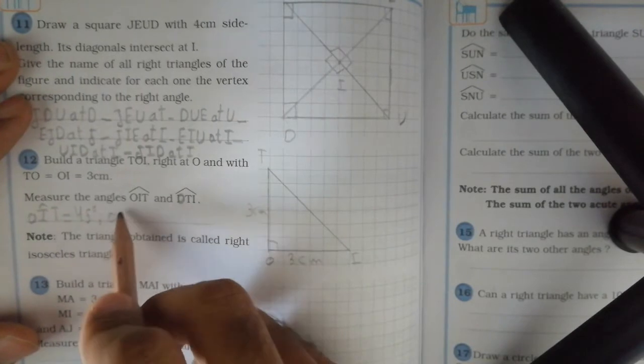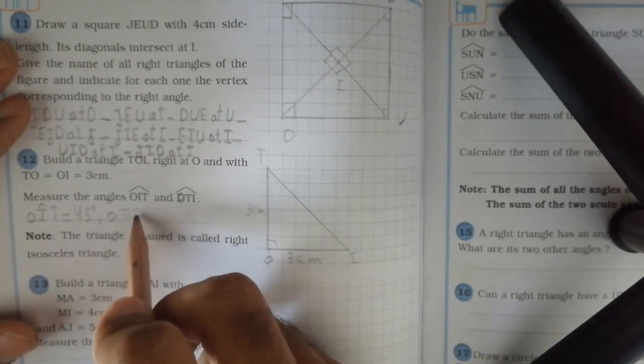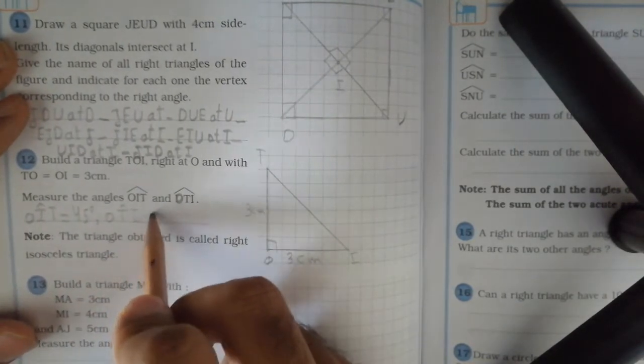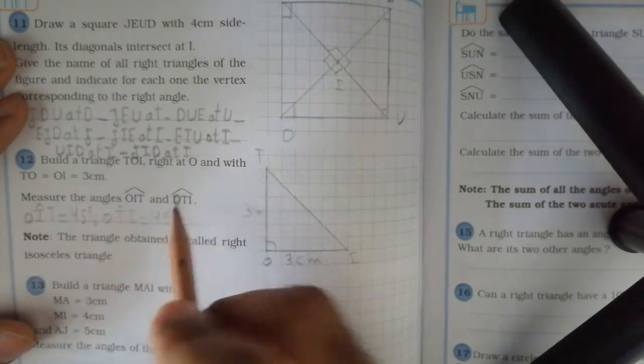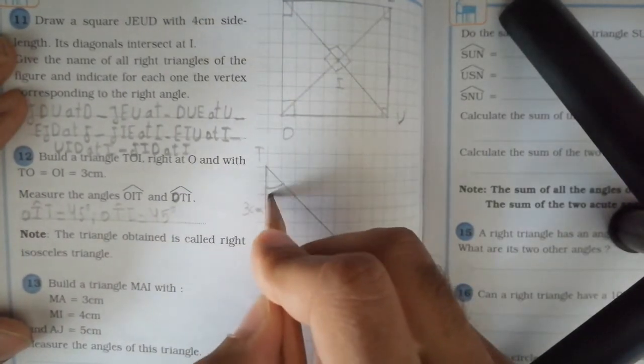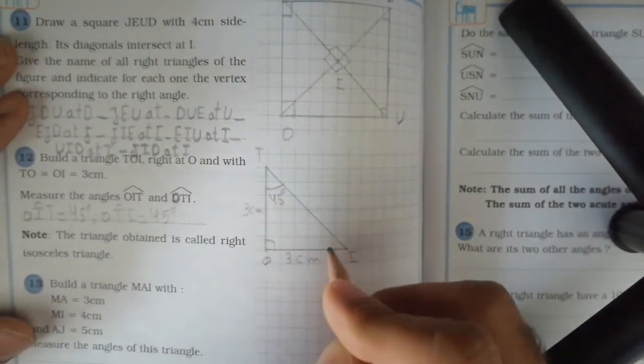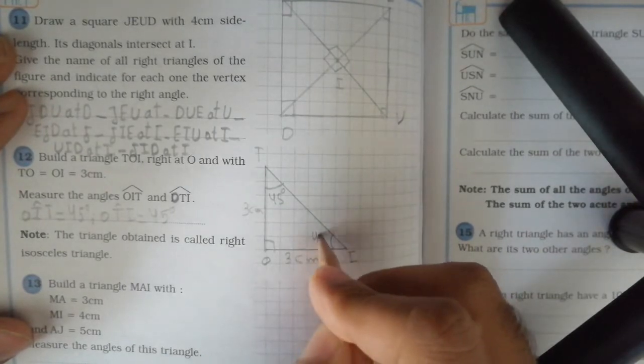It measures 45 degrees. So OTI equals 45 degrees. This angle is 45 degrees and this angle is 45 degrees.